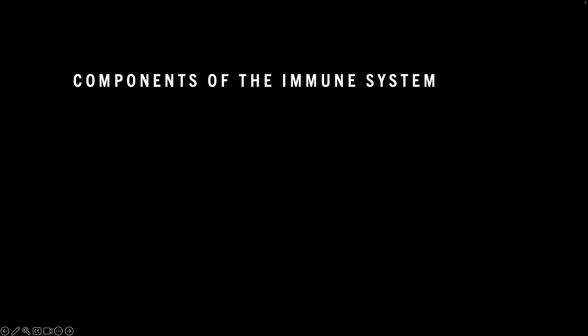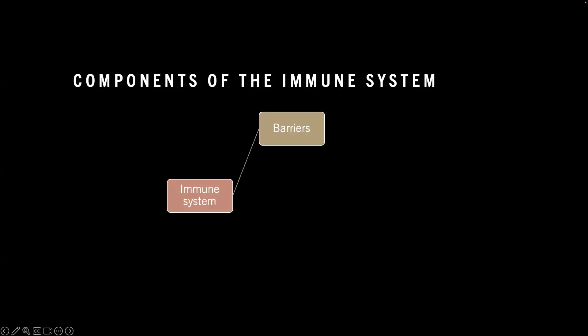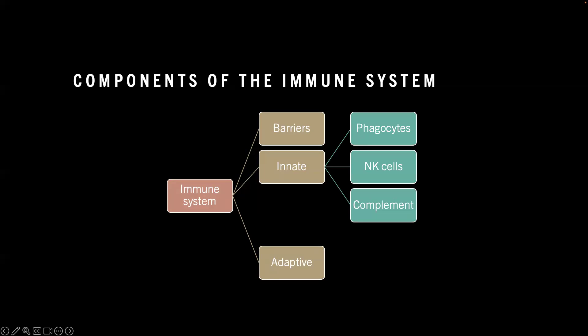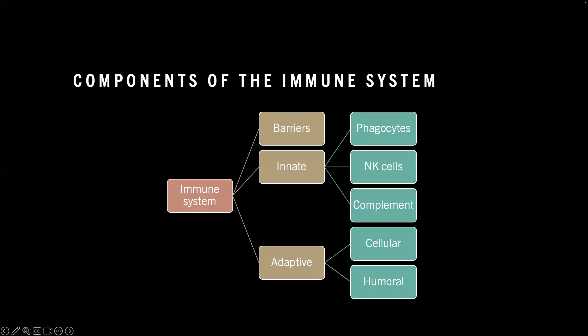To understand what the drugs do, it's important to understand the immune system as a basis. Our immune system is made up of different components. First are the barriers that prevent infection — physical barriers and chemical barriers — including tight cellular junctions, mucus, cilia, lysozyme, defensins, and the microbiome. Any damage to these barriers results in susceptibility to infection. Then we have the innate immune system (without memory) and the adaptive immune system (which can develop memory), composed of cellular and humoral (antibody) responses.